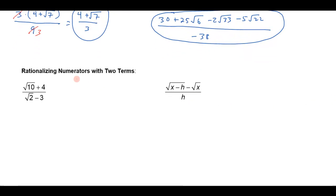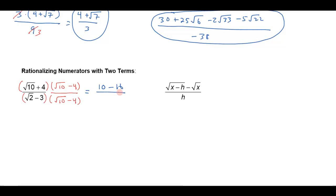Let's do the same thing now by rationalizing the numerator. The same principle holds: if I have a binomial, in order to get rid of the radical I'm going to have to multiply by that conjugate. So in this case I'll multiply by the square root of 10 minus 4 over the square root of 10 minus 4. That's what's going to get rid of the radical in the numerator. When I multiply that out, I'll just get 10 minus 16, since I know the outers and inners are going to cancel because these are conjugates.